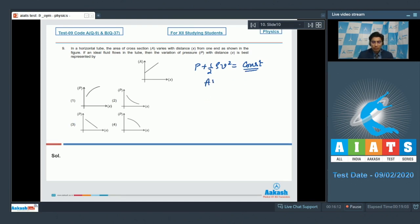Also from the equation of continuity, the product of area and velocity will be constant. From this graph, we can write down that A has a variation with x as A is equal to mx plus c, where m is the slope and c is the intercept.